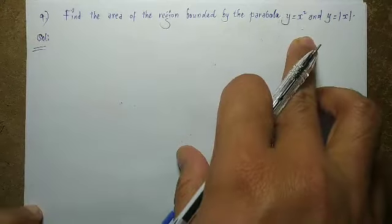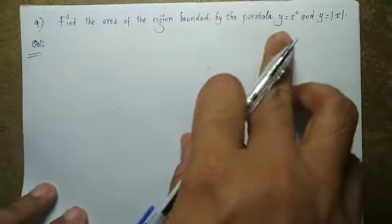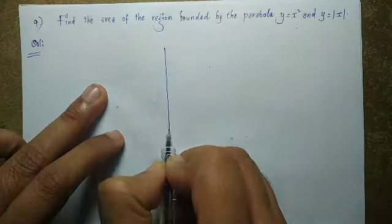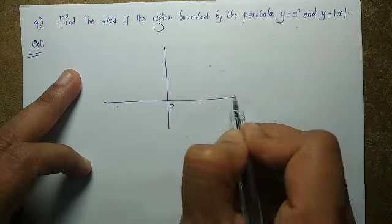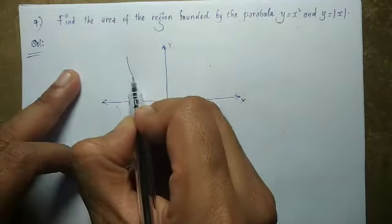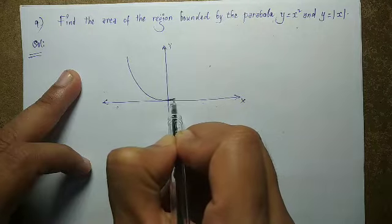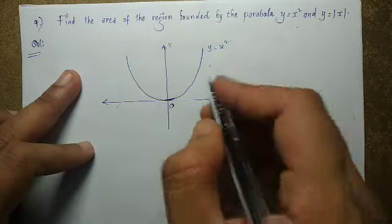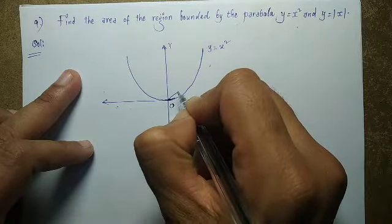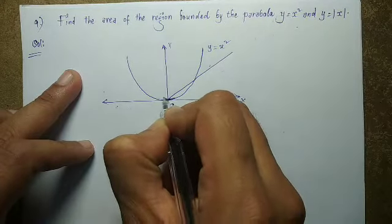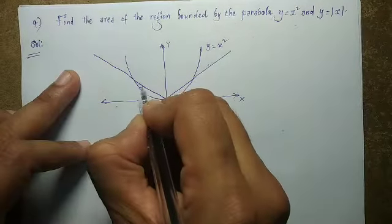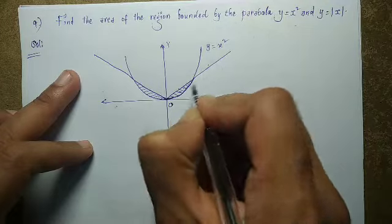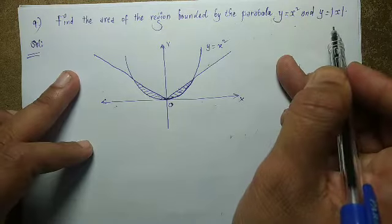Next problem: find the area of the region bounded by the parabola y = x² and y = |x|. Here y = x² is an upward parabola, and y = |x| means y = x for x ≥ 0 and y = −x for x ≤ 0. The shaded region between these curves is what we need.